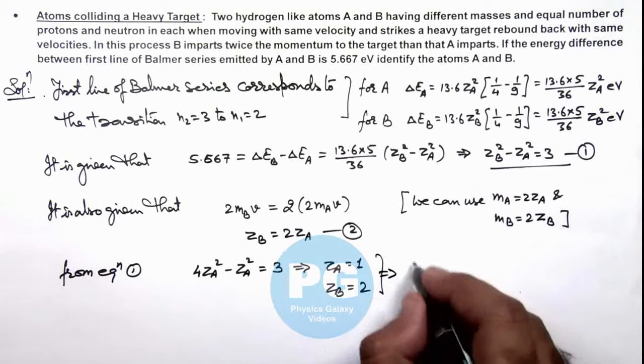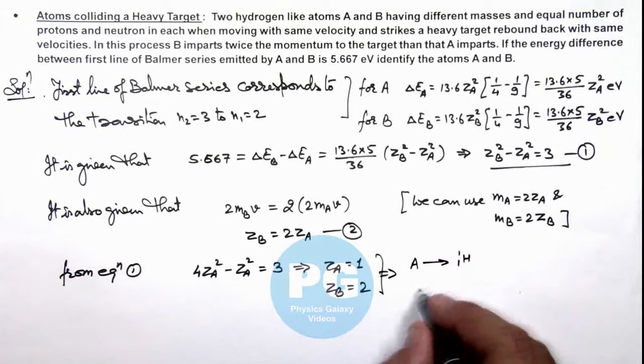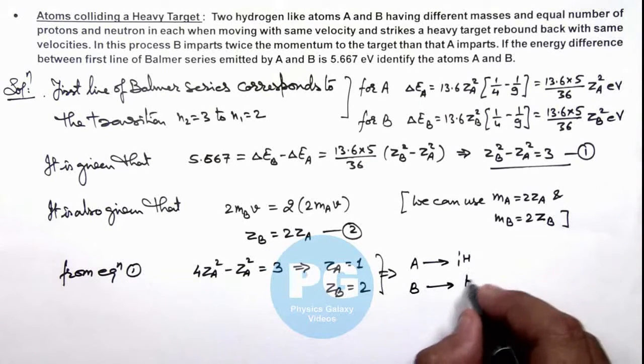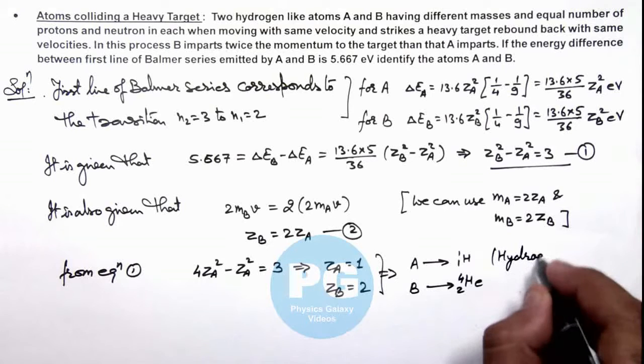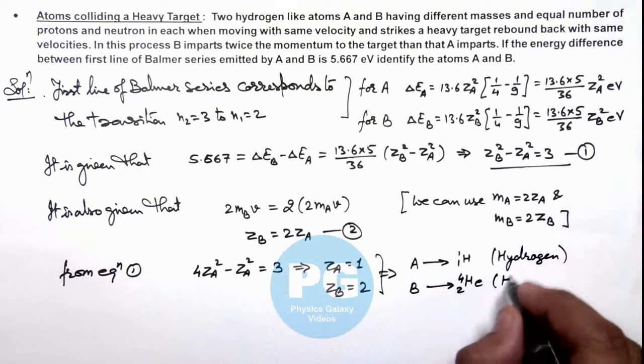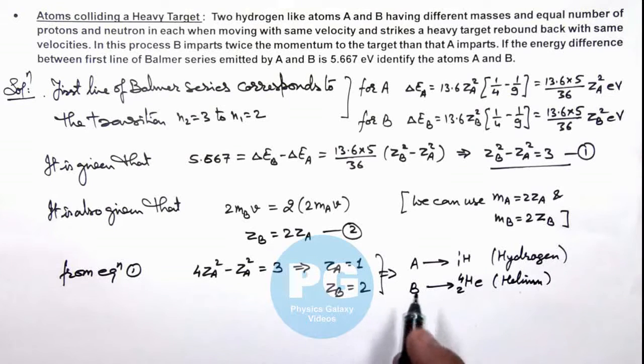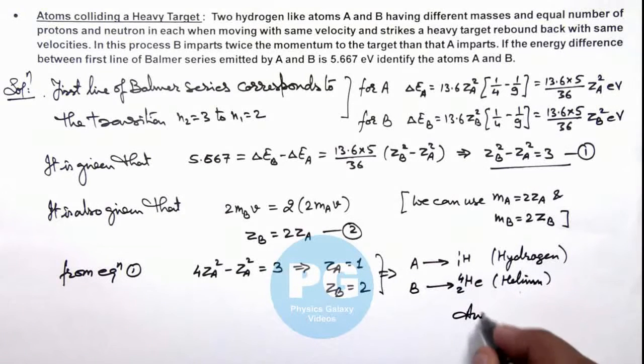Which implies A is hydrogen (¹H) and B is helium (⁴He). So this is hydrogen and this is helium. In this situation we were required to find the two atoms A and B, which we have obtained as the final result.